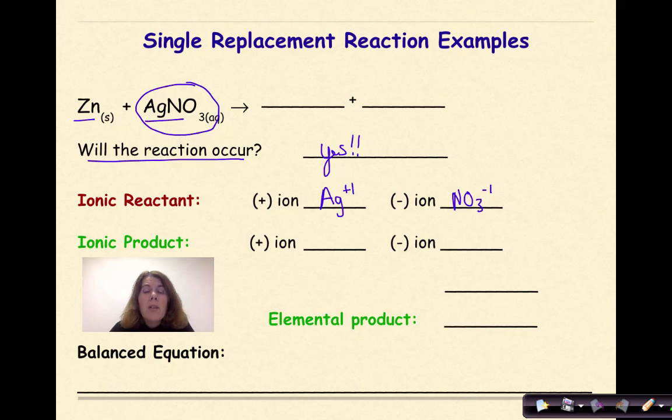Our ionic product is going to be the zinc because we know it's going to be replacing the Ag. So we know that the charge on zinc is Zn plus two and NO3 minus one.